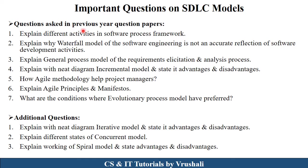These are some important questions on SDLC models asked in previous year question papers: explain different activities in software process framework — you have to explain all software activities like requirement gathering, design, develop, testing, deploy, and maintenance with a diagram. Then explain why the waterfall model of software engineering is not an accurate reflection of software development activities — here explain all disadvantages of waterfall model. Explain the general process model of the requirement elicitation and analysis process. Then explain with a neat diagram the incremental model with advantages and disadvantages. Explain how agile methodology helps project managers — explain all agile model advantages with their principles. Then explain agile principles, and explain the conditions where evolutionary process model is preferred — here explain why spiral model, prototyping model, and concurrent model are necessary. These questions are generally asked for seven to eight marks.